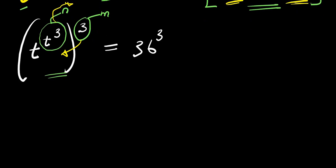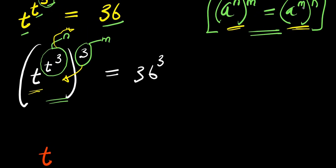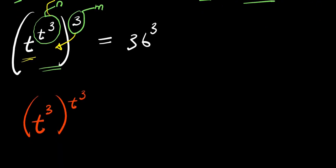So this equation becomes — remember the t cubed is still the base — the equation becomes t, where t is constant, and we bring the 3 inside the bracket and t power 3 outside the bracket. Basically we are treating t power 3 as a single term, and that's why we have gotten that result. So this equals 36 to the power of 3.